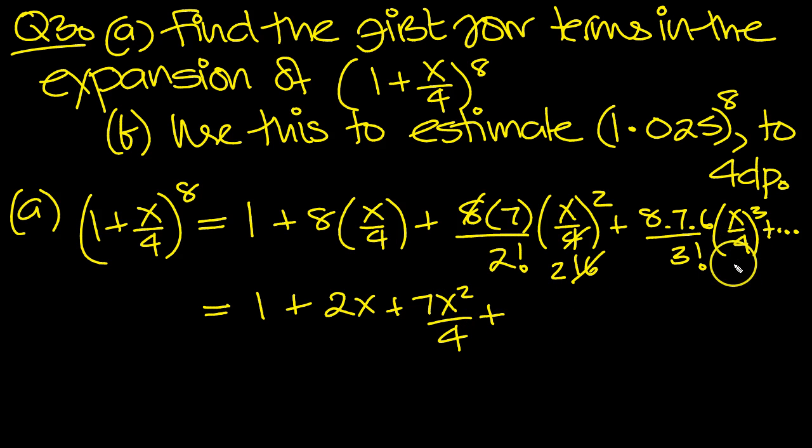Now here we've got a 4 cubed. So it's a 4 times a 4 times a 4. So let's get rid of that one. This is a 6, isn't it? So that cancels with that. This 4 will cancel with the 8 to leave a 2. This 4 will cancel with the 2 to leave a 2 underneath. So we end up with 7x cubed. And here we've got a 2 and a 4 is 8. Plus dot, dot, dot.